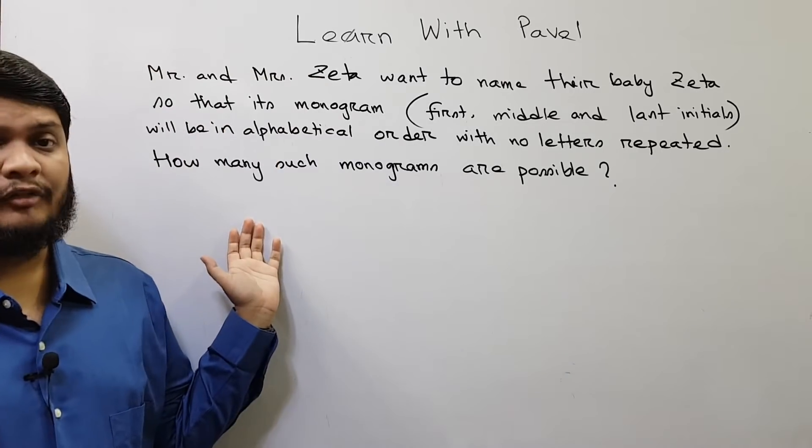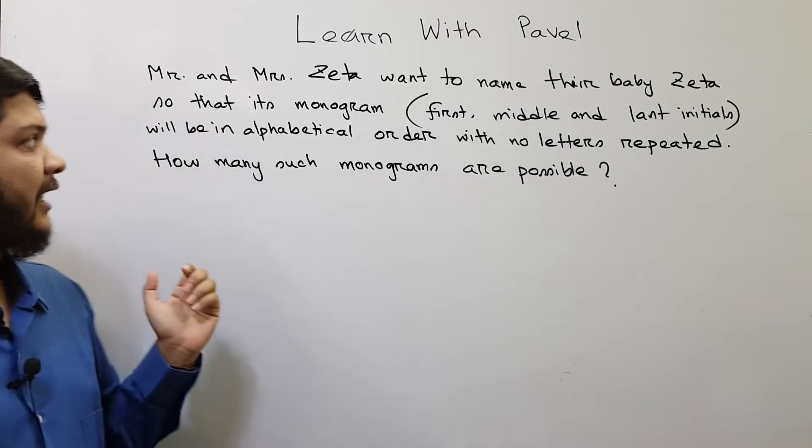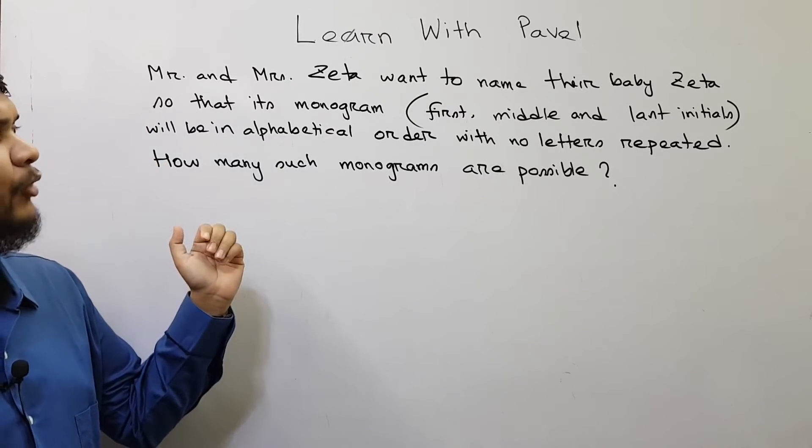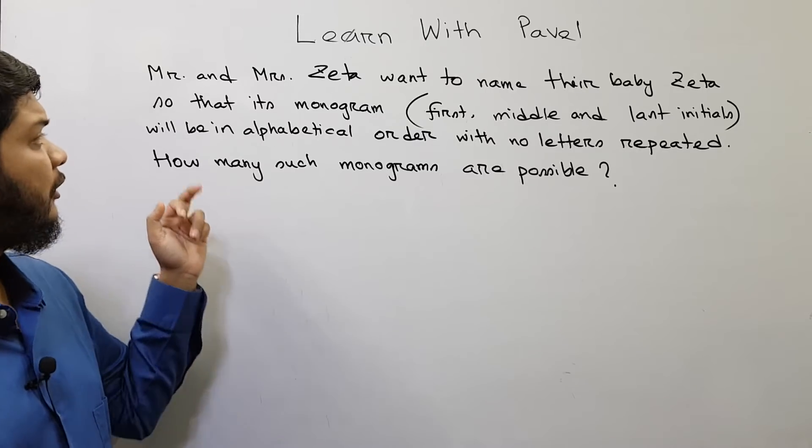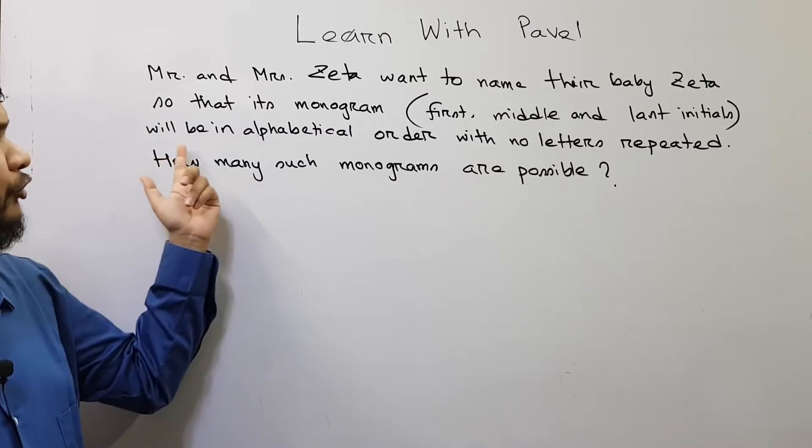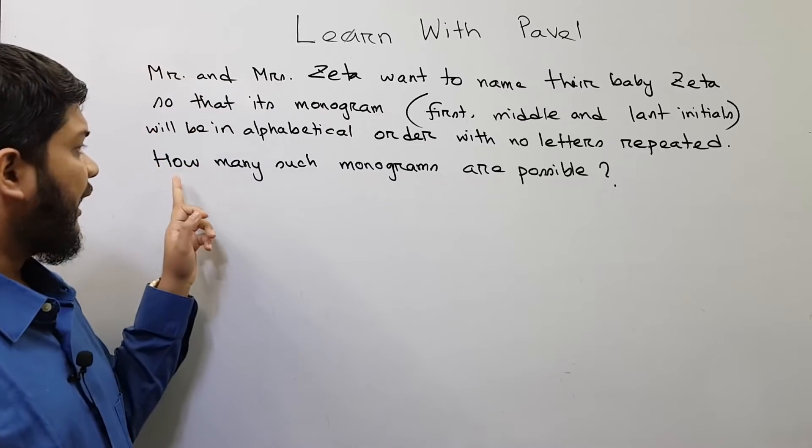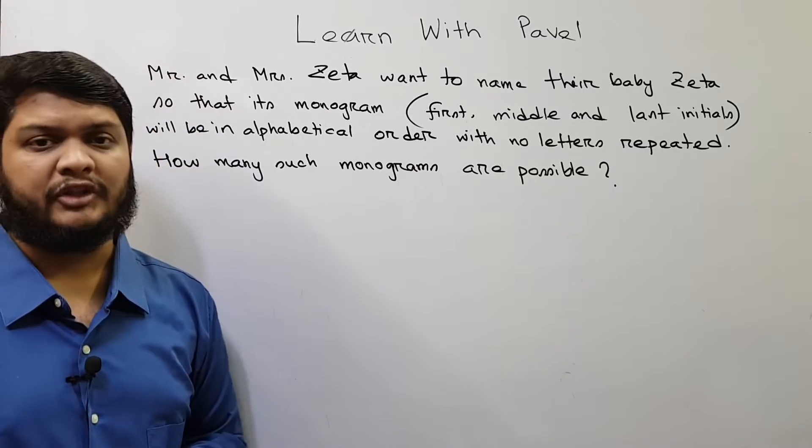This problem is of American high school mathematics examination. So let's get started. Mr. and Mrs. Zeta want to name their baby Zeta so that its monogram, that is first, middle and last initials, will be in alphabetical order with no letters repeated. How many such monograms are possible?